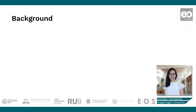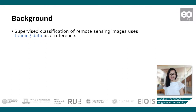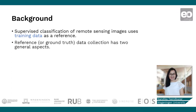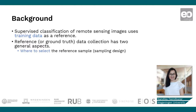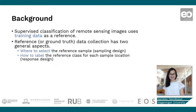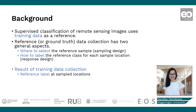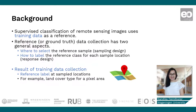Supervised classification of remote sensing images uses training data as reference. When collecting training data or ground-truth data, we need to consider two aspects. Firstly, where to select the reference sample — otherwise known as sampling design — and how to label the reference class for each sample location, also known as response design. The main aim of training data collection is to identify the reference label at sampled locations.